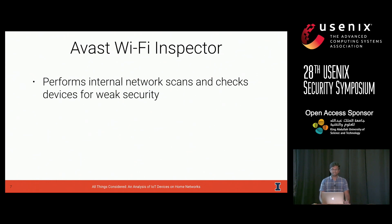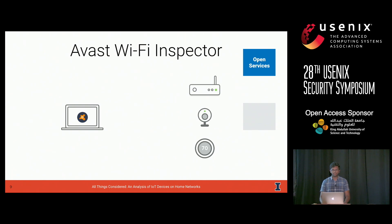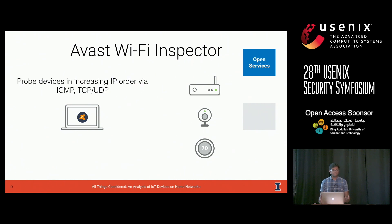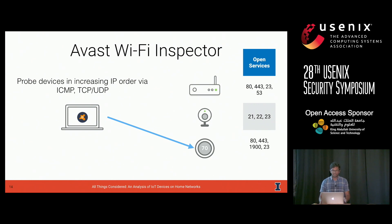Wi-Fi Inspector does three things: device inventory and identification, letting the user know what devices are connected; probing those devices for weak default credentials on popular services; and checking for vulnerabilities to known CVEs. To illustrate: say your home has a router, a surveillance camera, a smart thermostat, and a computer running Avast. The tool actively probes devices in increasing IP order via ICMP, TCP, and UDP, and figures out what services are open — your router might speak HTTPS, DNS, and Telnet; your camera might have FTP, SSH, and Telnet; your thermostat might have HTTPS, UPnP, and Telnet.